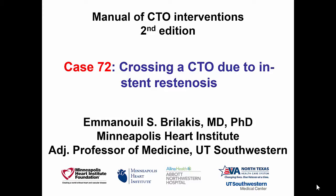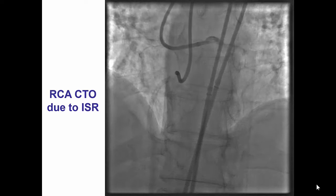Hi, this is Manos Brilakis presenting case 72 for the second edition of the Manual of CTO Interventions. This is a case illustrating crossing of a CTO due to in-stent restenosis going around the stent.